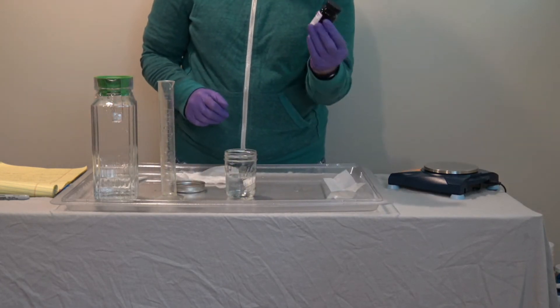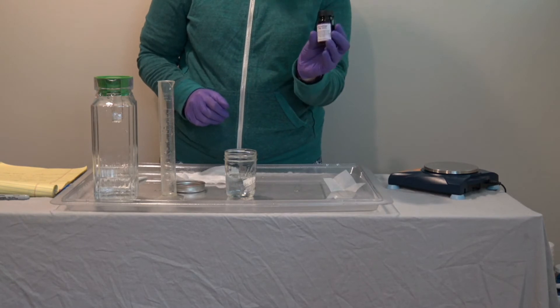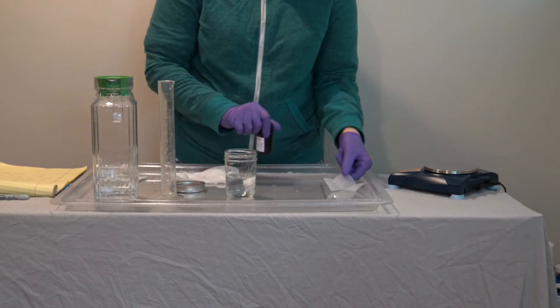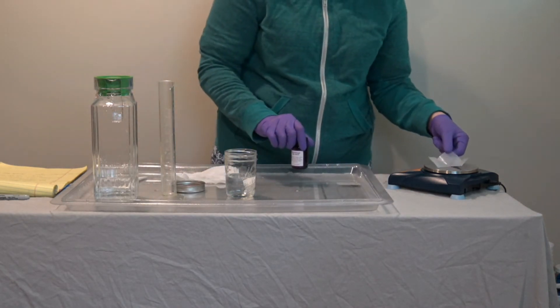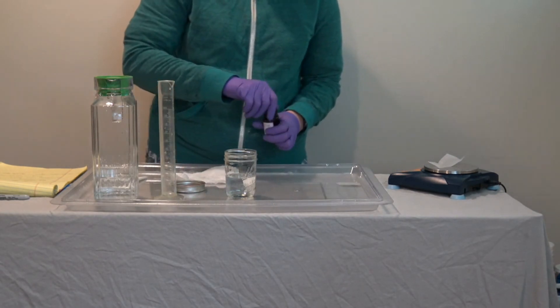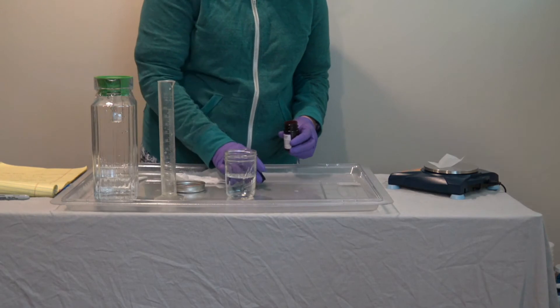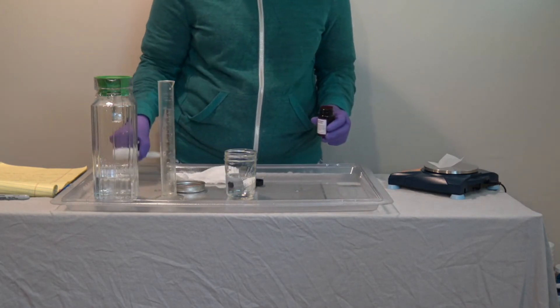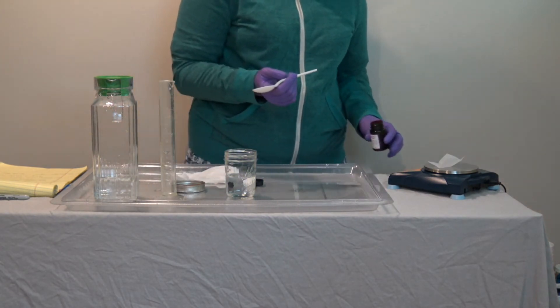And then you will have a dried powdered red cabbage juice that we will weigh out. So I'm going to put a piece of parchment paper on my scale and tare it. And we are weighing out 0.1 grams of this.